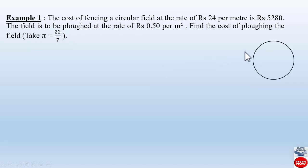First of all let us understand the question. We have a circular field. The cost of fencing this circular field is given at the rate of rupees 24 per meter — so for 1 meter the cost of fencing is 24 rupees. The total cost required to fence the whole circular field is rupees 5,280. The field is to be plowed at the rate of 0.50 per meter square.